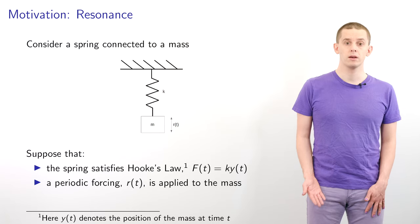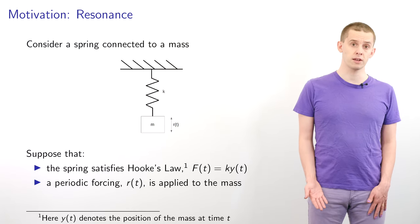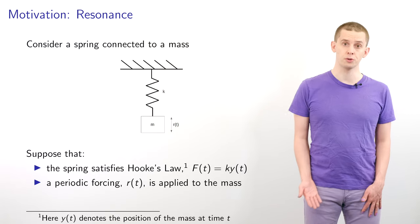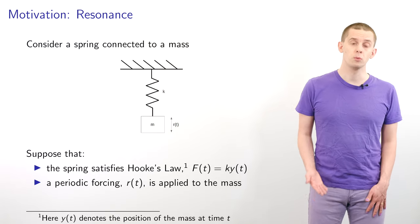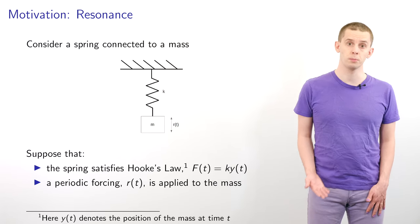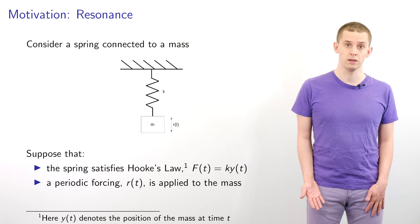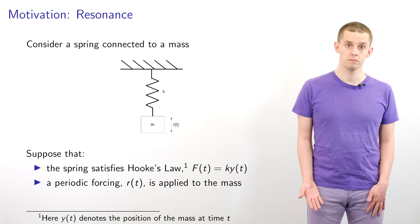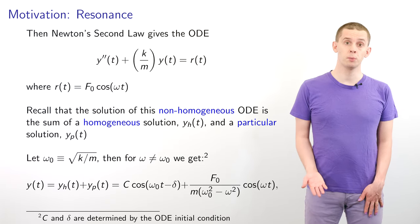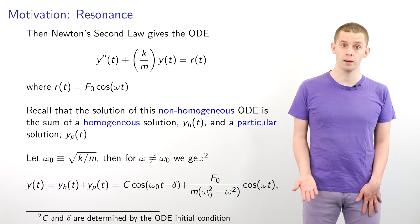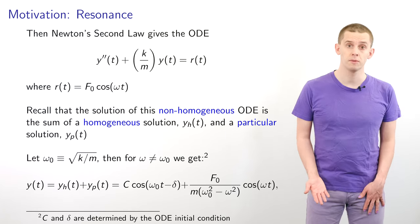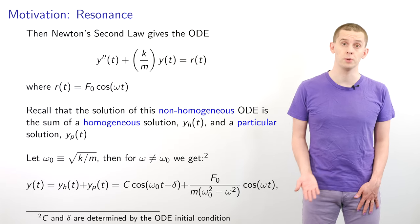Let's suppose that the spring satisfies Hooke's law, so that the force f of t is equal to k times y of t, where k is the spring constant. And let's also suppose that we apply a periodic forcing r of t to the mass. If we now apply Newton's second law, then we obtain the ODE: y double prime of t plus k divided by m times y of t is equal to r of t. Here we put our forcing function r of t equal to f_0 times cosine omega t.